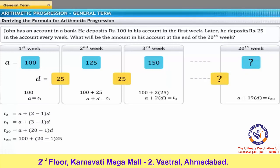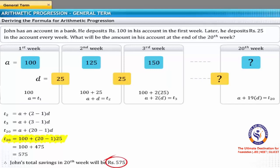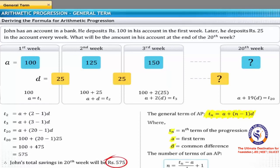Therefore, T20 equals 100 plus (20 minus 1) multiplied by 25. On solving, you get T20 as 575. In other words, John's total savings in the 20th week will be 575 rupees. If you substitute 20 with N in the above calculation, you will get a general formula for calculating the Nth term of an AP. Thus, TN equals A plus (N minus 1) multiplied by D, where TN equals the last term of the progression, A equals the first term, and D equals the common difference. The number of terms N equals (TN minus A) divided by D, plus 1.